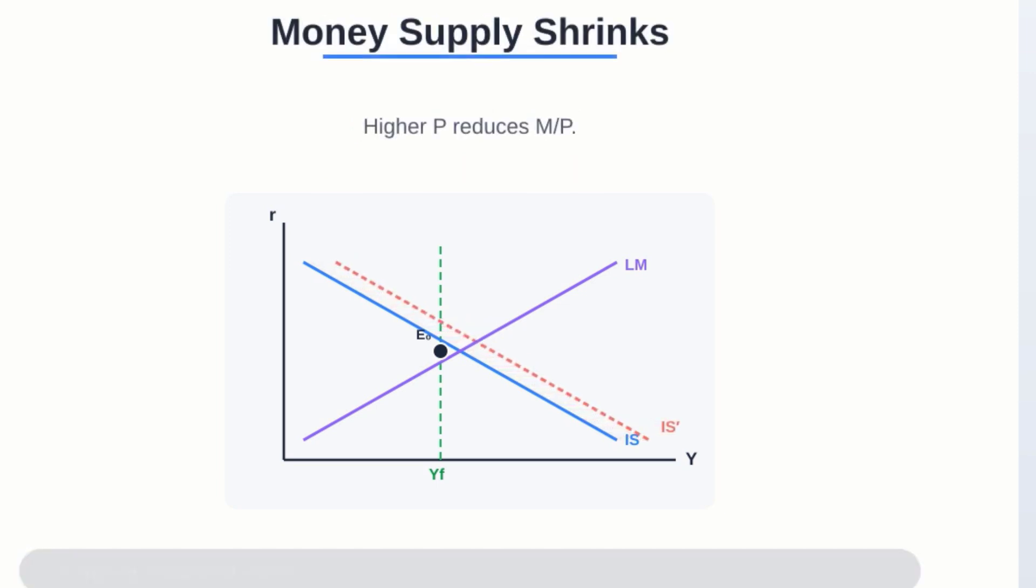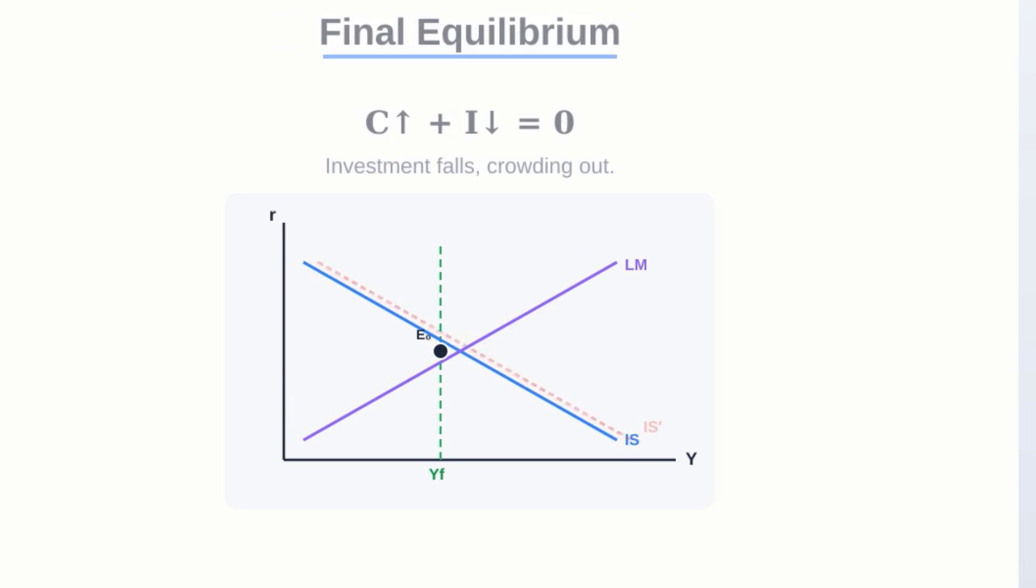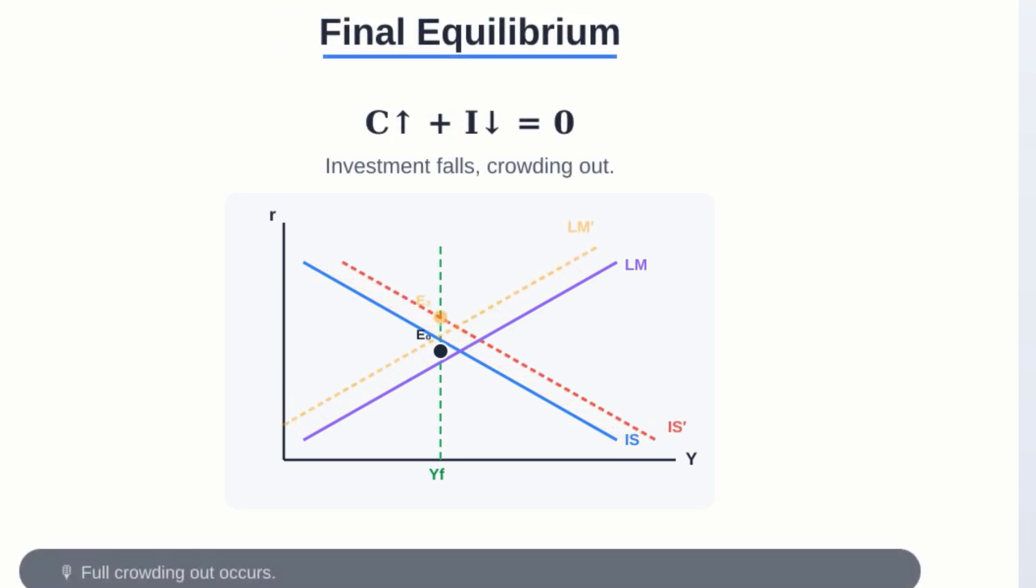So to recap, a tax cut at full employment gets you higher interest rates and consumption, but it lowers investment and national savings, leaving total output exactly where it started. It's a stark reminder, isn't it? At full employment, you can't boost today's consumption without stealing from tomorrow's investment.